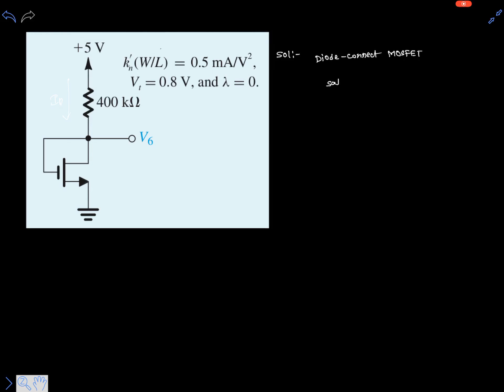So now let's write the current equation in saturation region. That is ID equals half KN dash multiplied with W over L and VGS minus VT whole square.